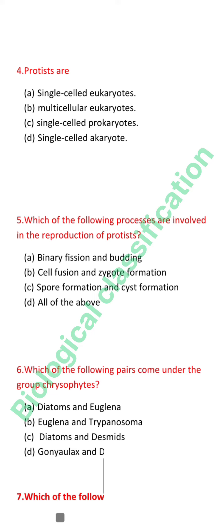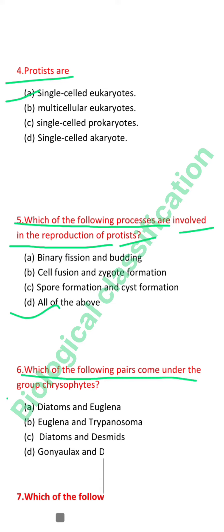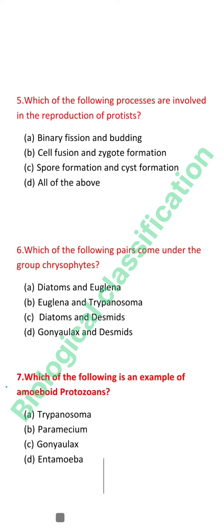Protists are option A. Which of the following processes are involved in the reproduction of protists? Option D. Which of the following is an example of a wild protozoan? Option D.